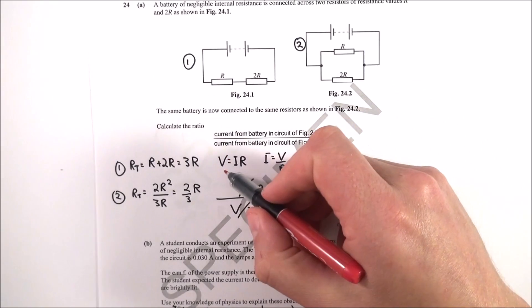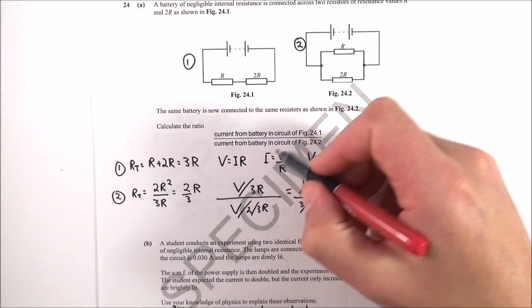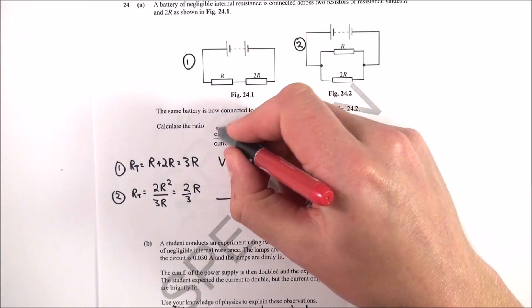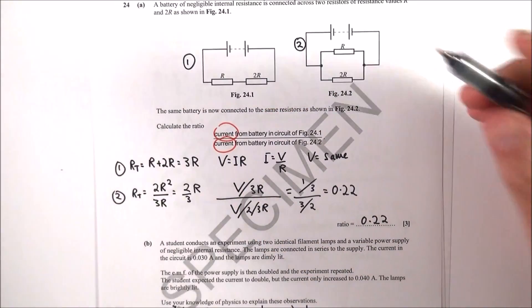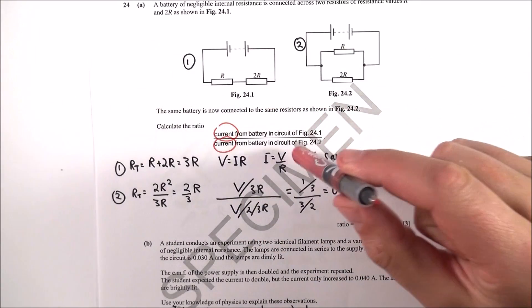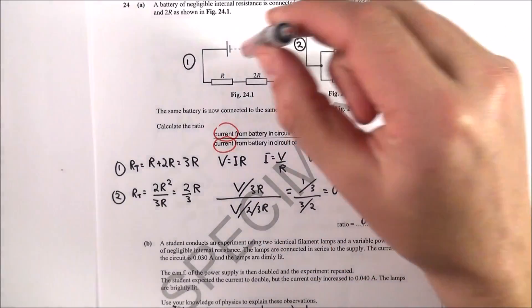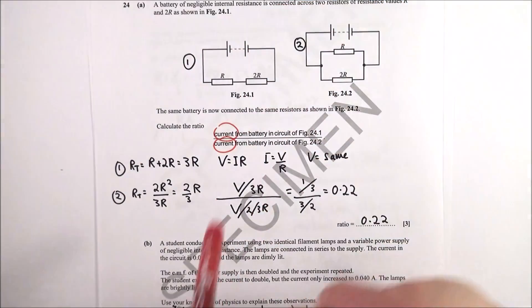I then looked at, basically we know the equation V equals I times R, or I is equal to V over R, because we want to look at the ratios of the currents. Basically when you have a higher resistance, you have a lower current, and these two things must have the same potential difference.